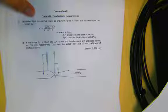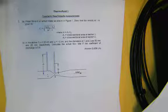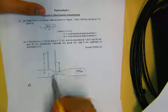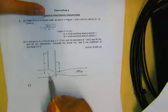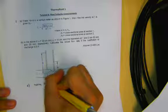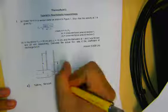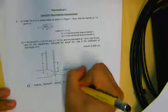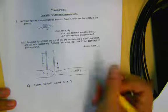Water flows in the venturi meter as shown in Figure 1. Show that the velocity at 1 is given by this expression. For this question we are asked to prove this expression, so what we are going to do first is to take Bernoulli about point 1 and point 2. We'll apply the Bernoulli equation about 1 and 2.